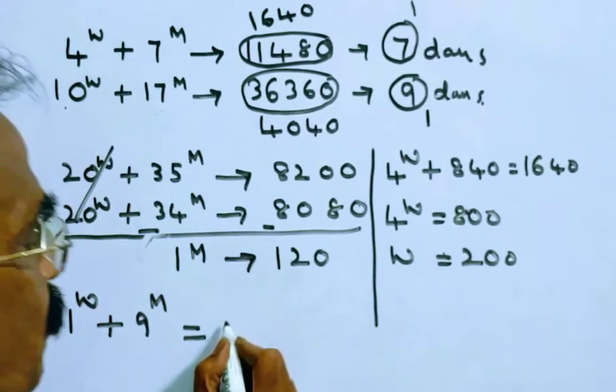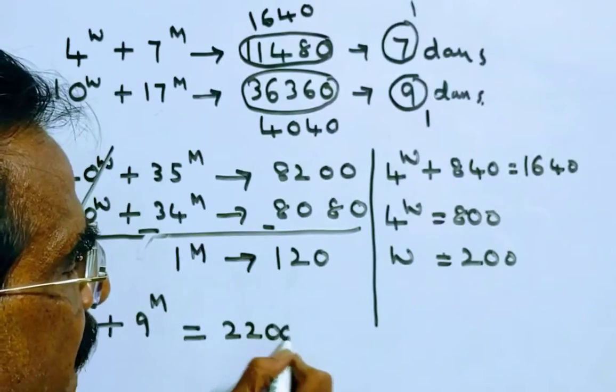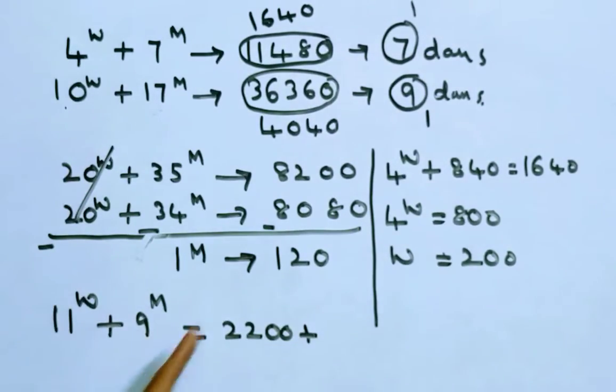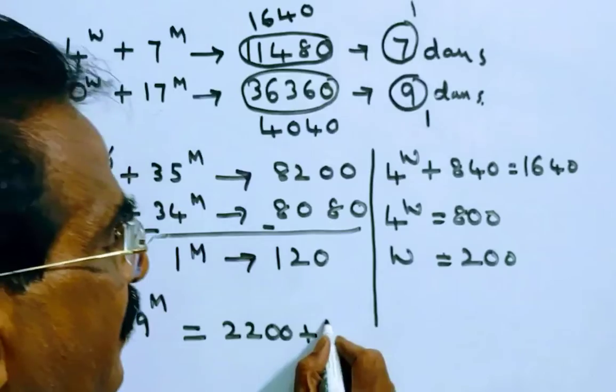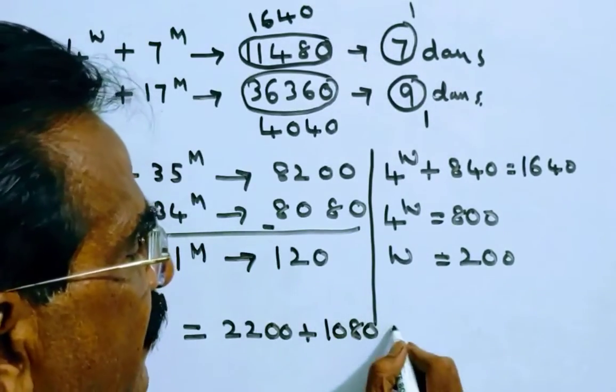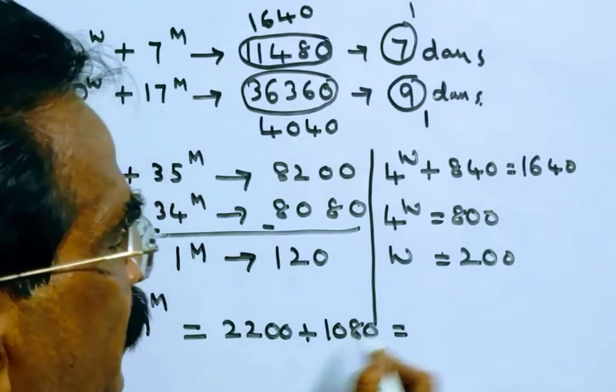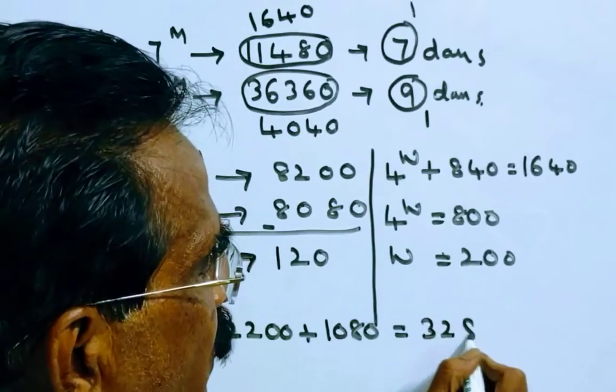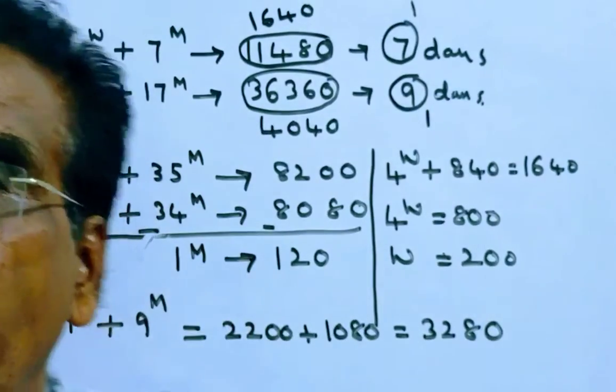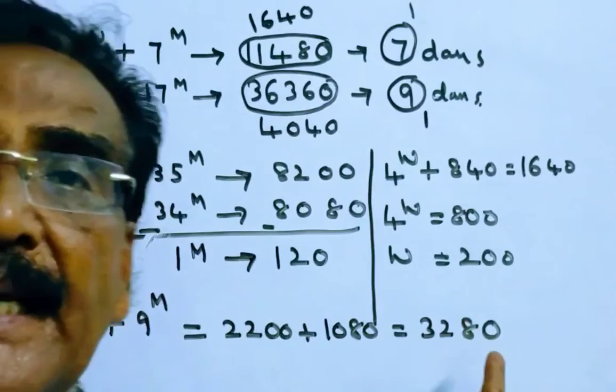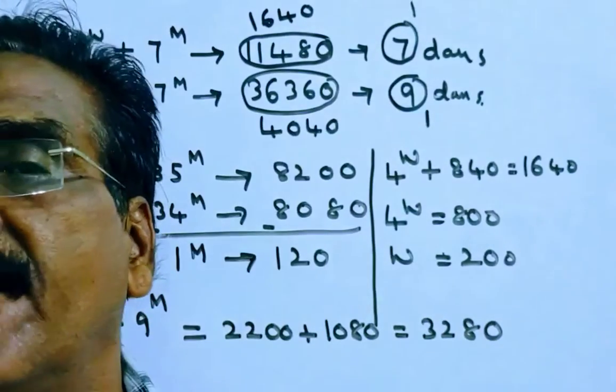In one day, 11 women earn 11 times 200 which is 2,200, plus 9 times 120 which is 1,080. This is equal to 2,200 plus 1,080 which is 3,280. Friends, 11 women plus 9 men can earn 3,280 in one day.